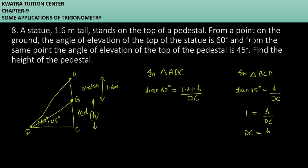Let the first be equation 1 and the second be equation 2. We will use both equations to find the values for H and DC. So first, tan 60 is root 3 equals 1.6 plus H over DC. And we can place H from equation 2 into DC.